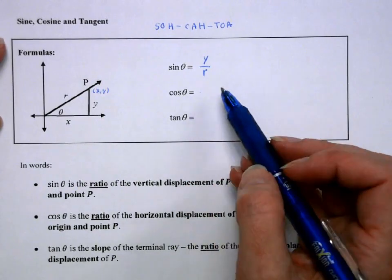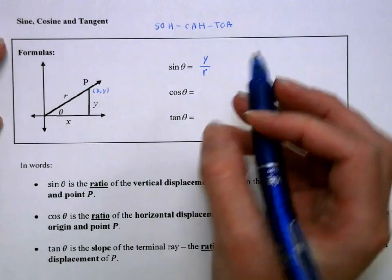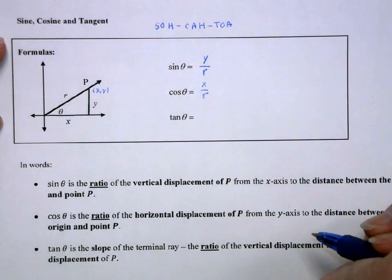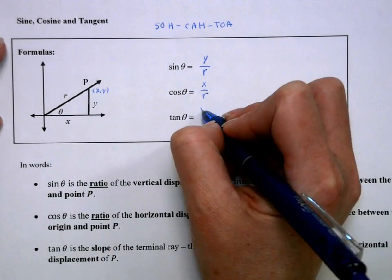Cosine is going to be adjacent over hypotenuse. So, in that case, it's going to be the x over r. And, tangent is going to be opposite over adjacent, which will be y over x.